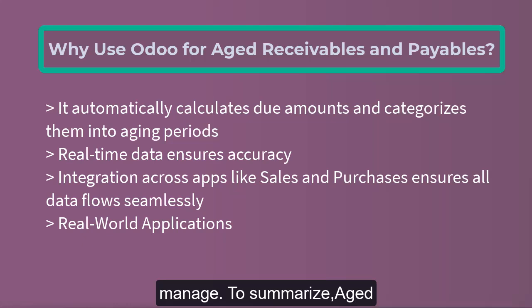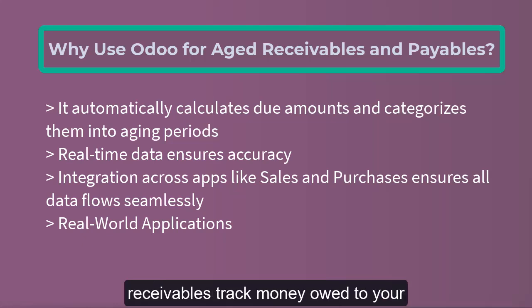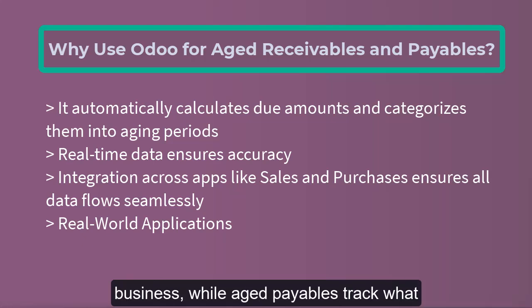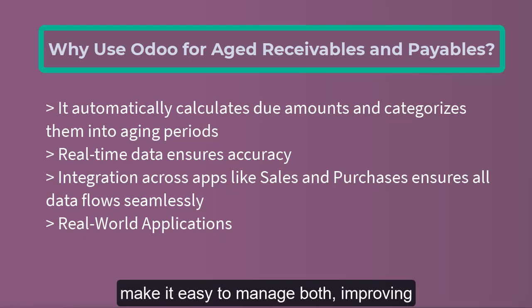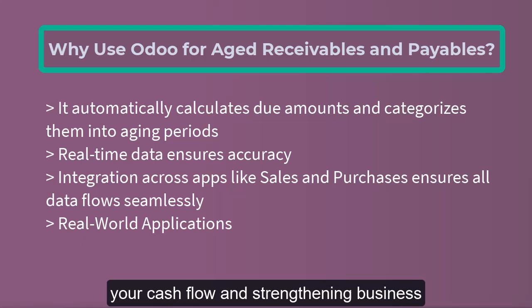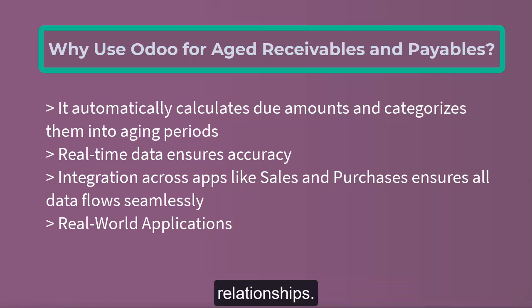To summarize, Aged Receivables track money owed to your business, while Aged Payables track what you owe vendors. Odoo's financial tools make it easy to manage both, improving your cash flow and strengthening business relationships.